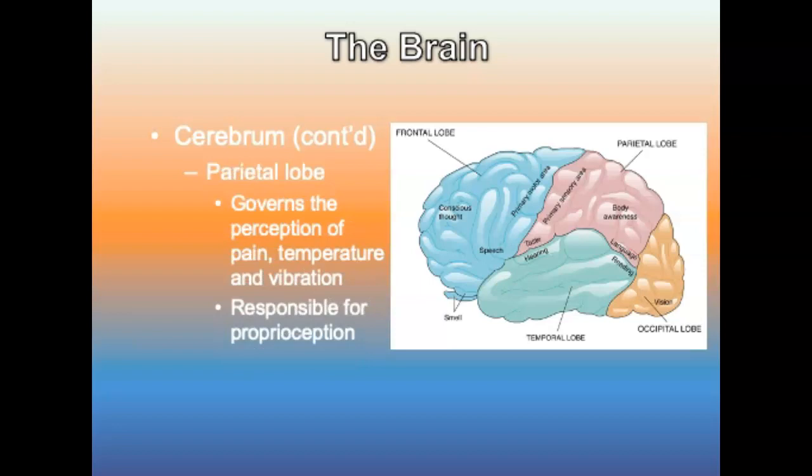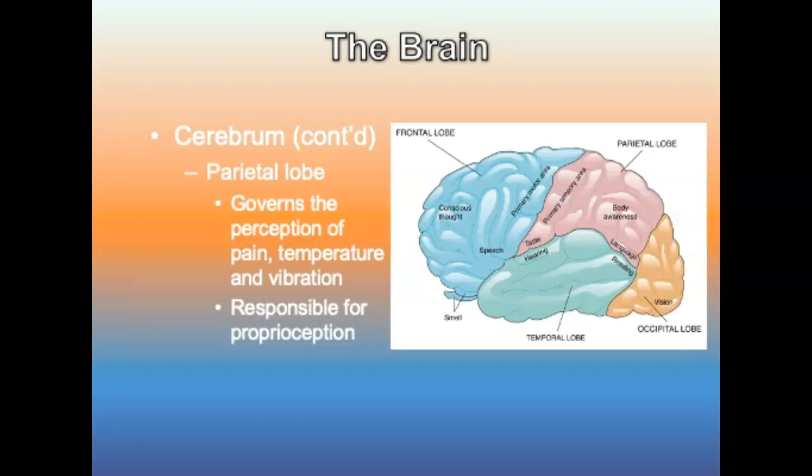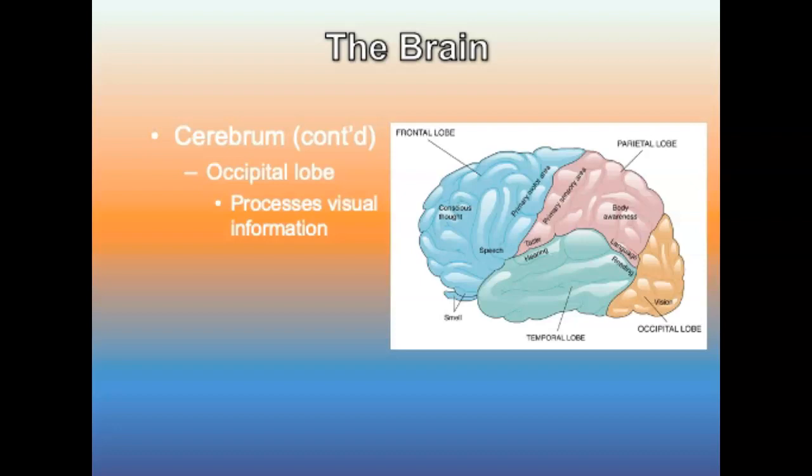The parietal lobe processes information from sensory receptors in the skin and joints and governs the perception of pain, temperature, and vibration. It is also responsible for perceiving position and movement of one's body or limbs. Injury to this lobe may prevent patients from calculating 2 plus 2 or knowing how many dimes are in a dollar. The occipital lobe processes visual information — a blow to the back of the head causes one to see stars. The temporal lobe controls speech, long-term memory, hearing, taste, and smell.